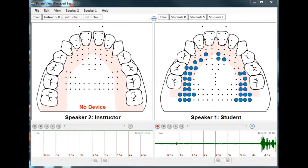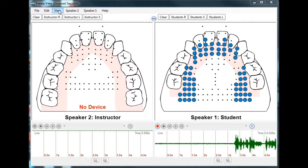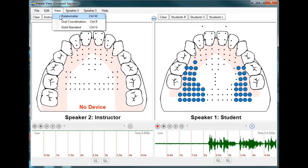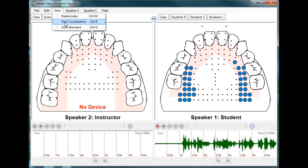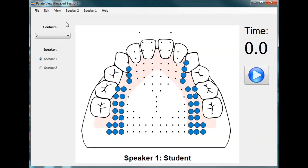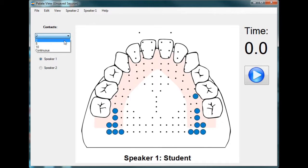To access the Tongue Coordination game, you will come to the Main Navigation and click on View and then Oral Coordination. Once you come to this view, you can start playing the game by choosing the number of randomly appearing contacts and then pressing Play.